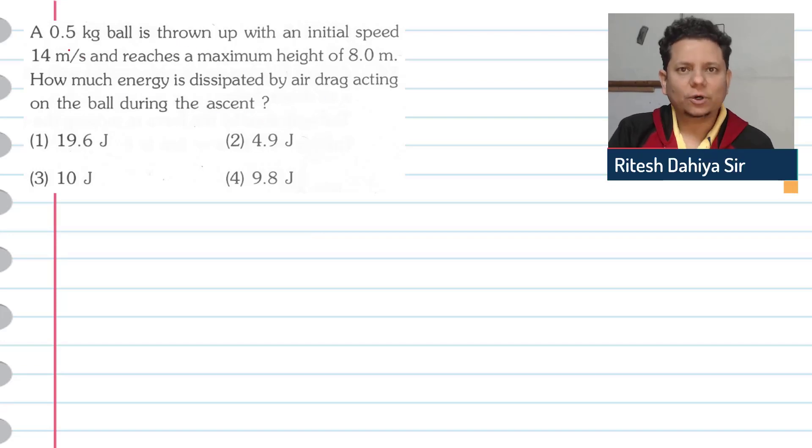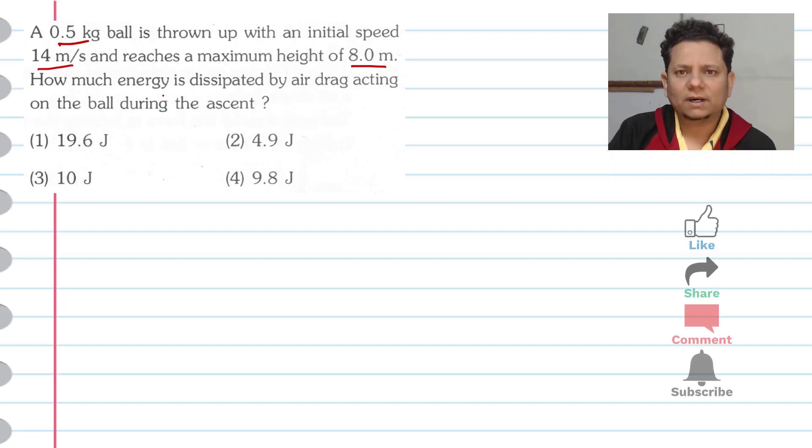Next question. A 0.5 kg ball is thrown up with initial speed of 14 meter per second and reaches a maximum height of 8.0 meter. How much energy is dissipated by air drag acting on the ball during the ascent? Option is 19.6 joule, 10 joule, 4.9 or 9.8.